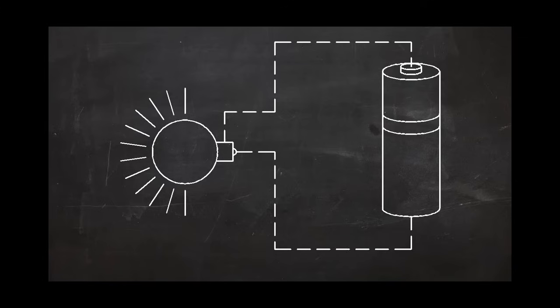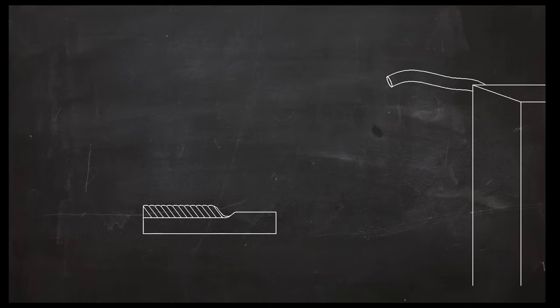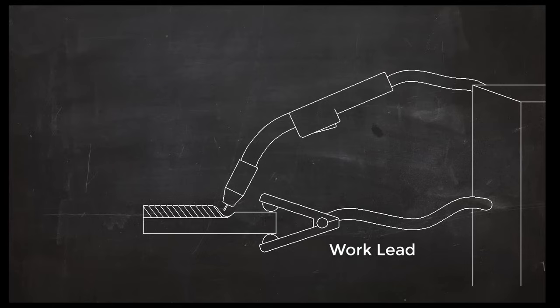In an electric circuit, the current flows in a loop. In flux core welding, the current has to flow in a complete circle from the machine to the gun, into the work, and back to the machine. A work lead is clamped to the work to complete the circuit from the workpiece back to the machine.